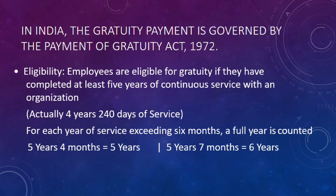You can see here: 5 years 4 months is considered as 5 years, and 5 years 7 months is considered as 6 years for Gratuity calculations.